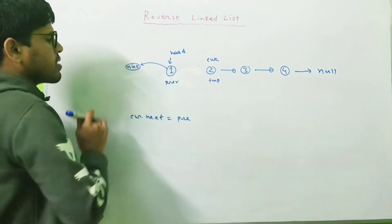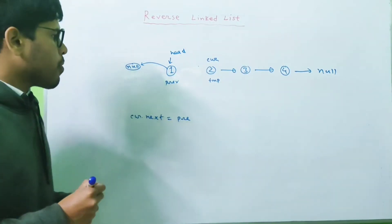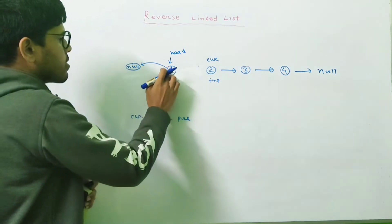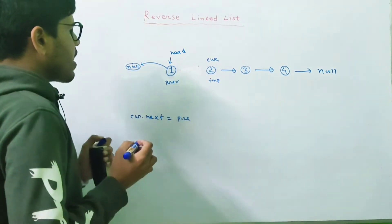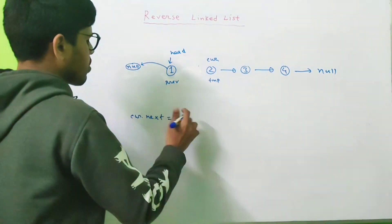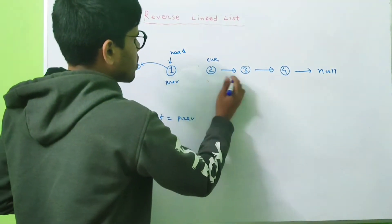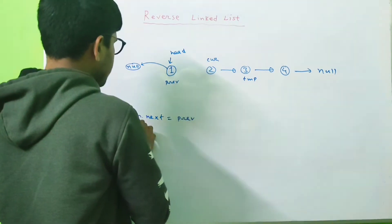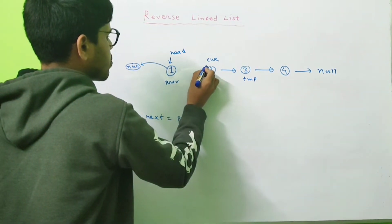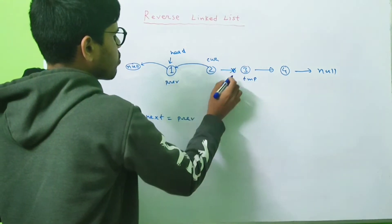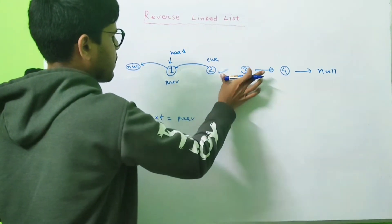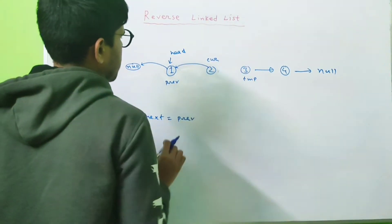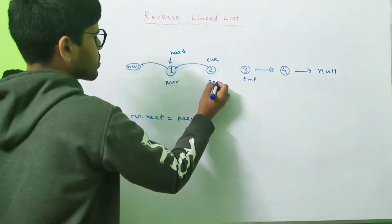At this point, prev always points to the head of the reversed linked list. Right now node 1 is the head of the reversed linked list. We move temp to the next node, then apply current.next = prev, so the current node now points back to node 1 and this link is disconnected. Then we move prev to current and current to temp.